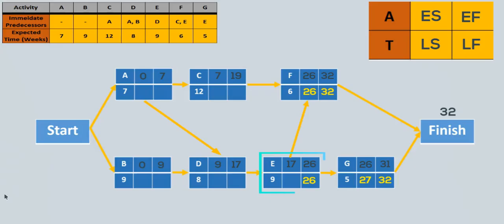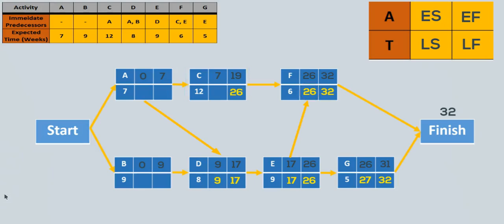Thus the latest start time for E will be 26 minus 9, which gives 17. D has only one successor E, so the latest finish time for D will be 17, and the latest start time will be 17 minus 8, which gives 9 for D. Activity C also has one successor F; therefore C's latest finish will be 26 and latest start will be 14. A has two successors, C and D, and the minimum of their latest starts is 9. So the latest finish for A will be 9 and its latest start will be 2. Activity B has one successor D with the latest start of 9. So the latest finish for B will be 9 and its latest start will be 0. Here we have completed calculating the backward pass.